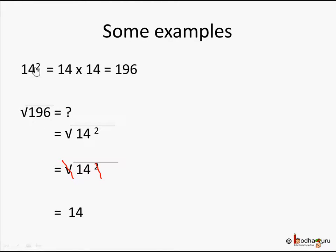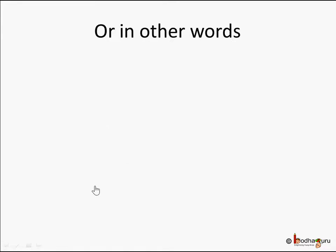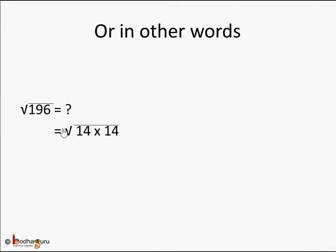When you use square root you are reducing the number, and when you use the square you are increasing the number — 14 squared means 14 into 14, which is 196. Square root of 196 is 14 because the square gets cancelled with the square root sign. In other words, square root of 196 is square root of 14 into 14 — since 196 is 14 times 14 — and you can cancel the square root sign because there are two 14s. So you are left with 14: square root of 196 is 14.